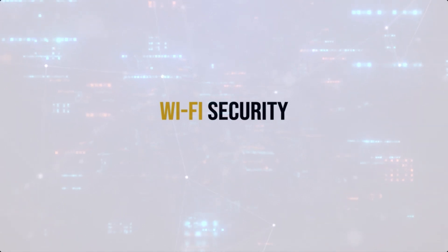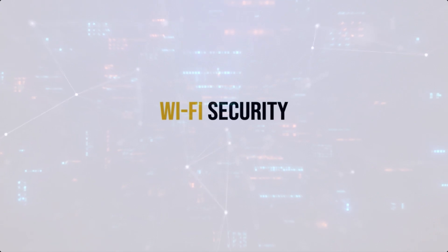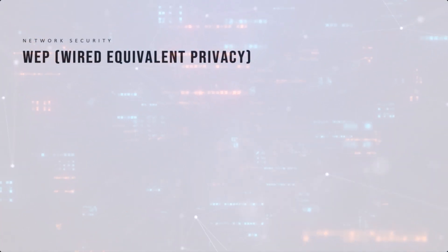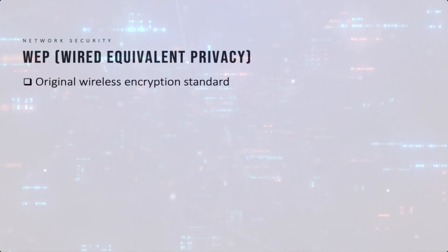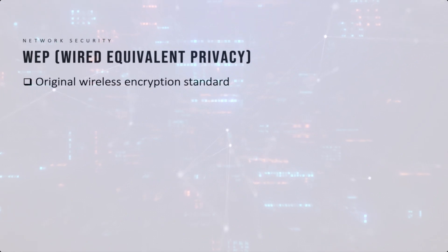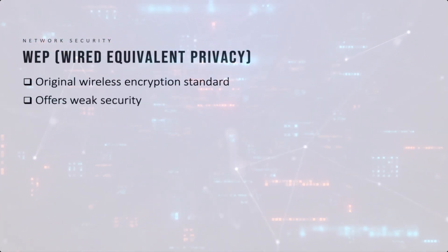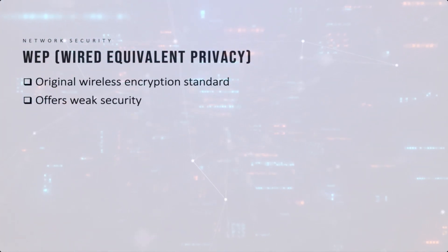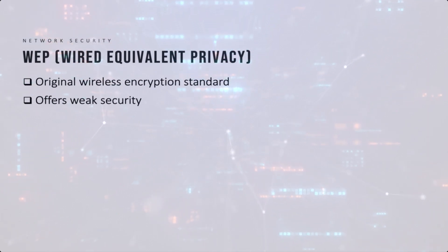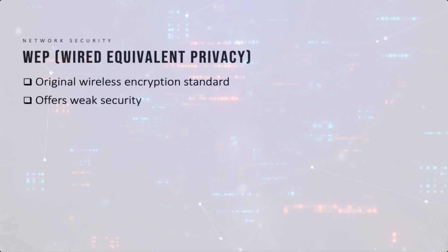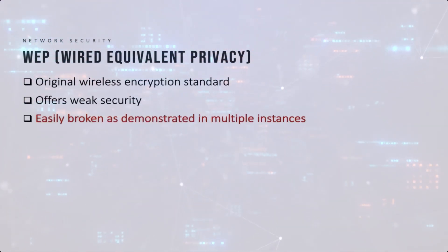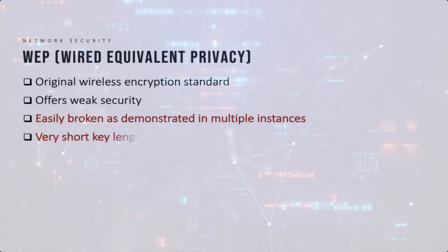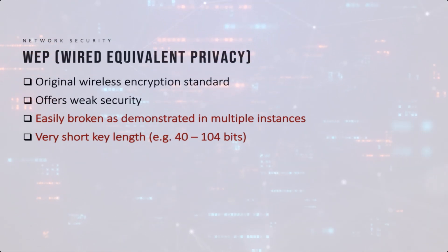We will now look at security encryption schemes for Wi-Fi networks, comparing their weaknesses and strengths. The first solution proposed was WEP, or Wired Equivalent Privacy, the original wireless encryption standard. It was the first solution proposed specifically for wireless networks, but it offered weak security. Over time, many vulnerabilities were identified in WEP and it is no longer considered secure — in fact, WEP has been shown to be broken in a few seconds. Another limitation was its very short key length of 40 to 104 bits.